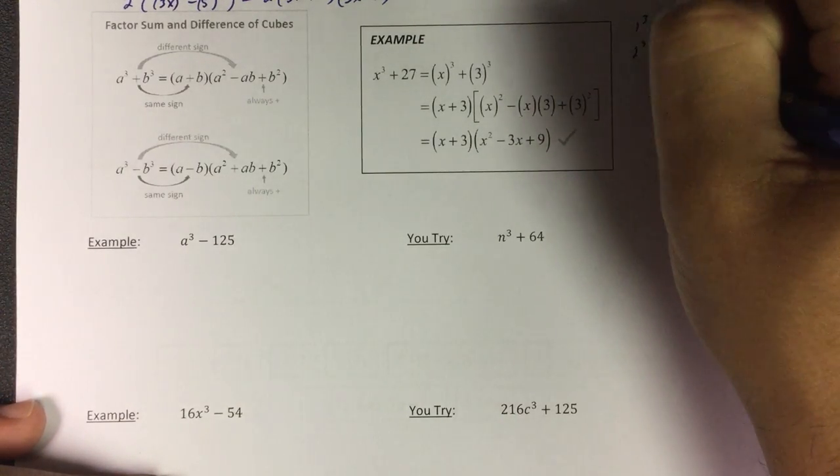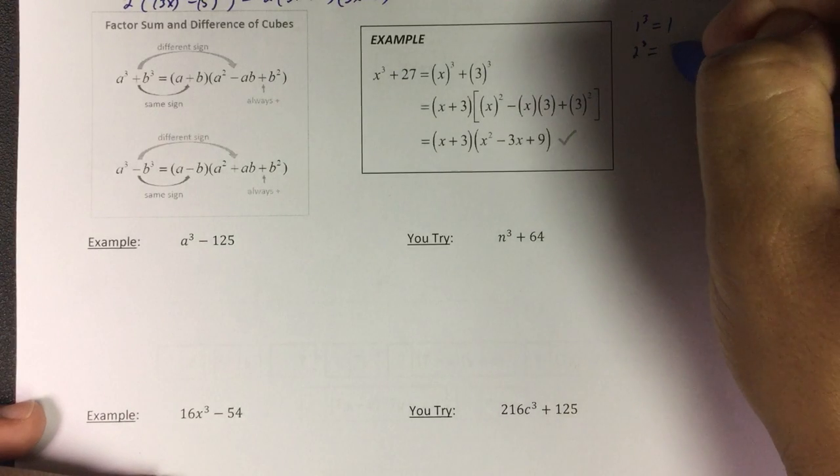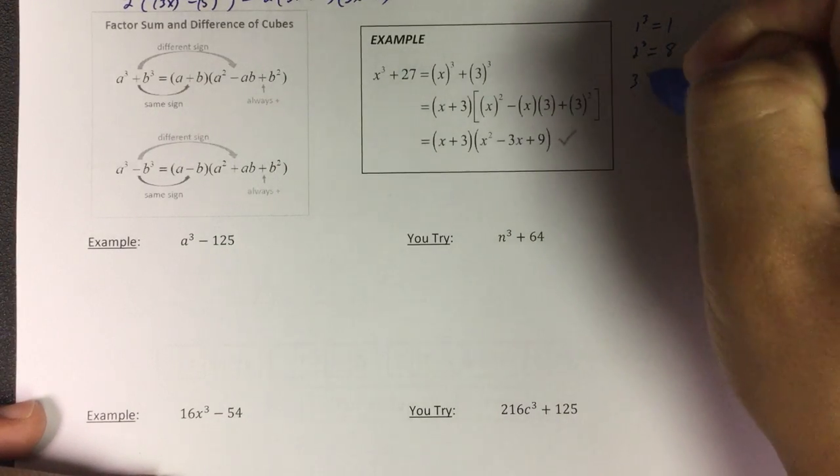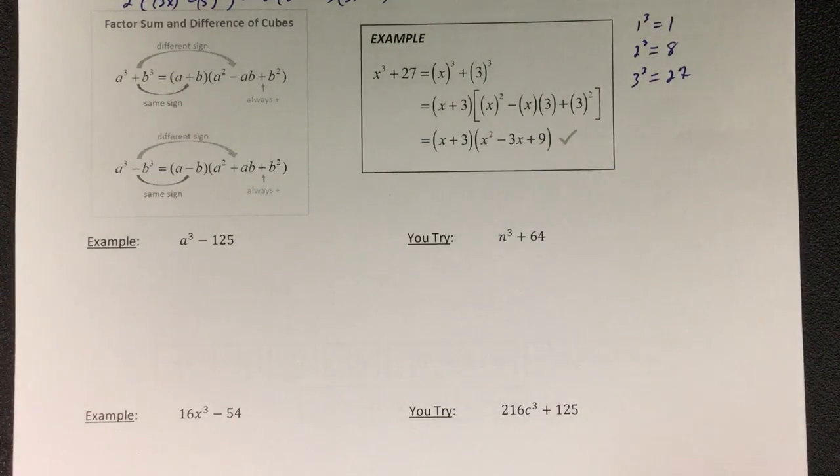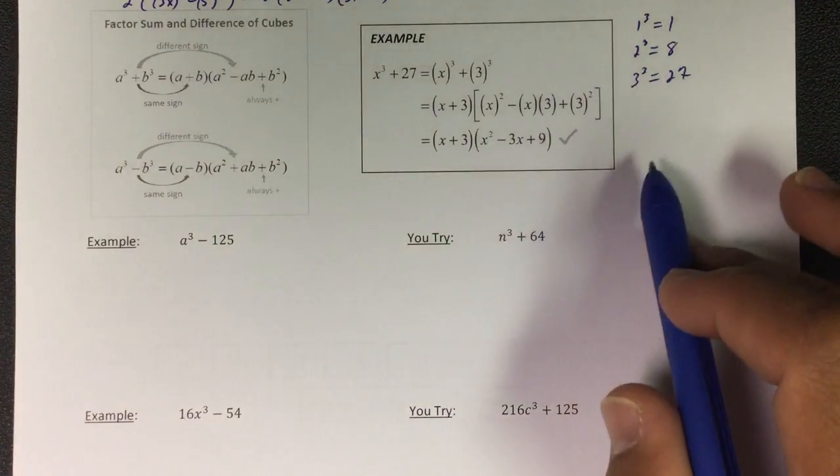2 cubed is 8, 3 cubed is 27. Mostly all, and even me, I would use a calculator and write this list out. That way you know you can find those numbers right away.